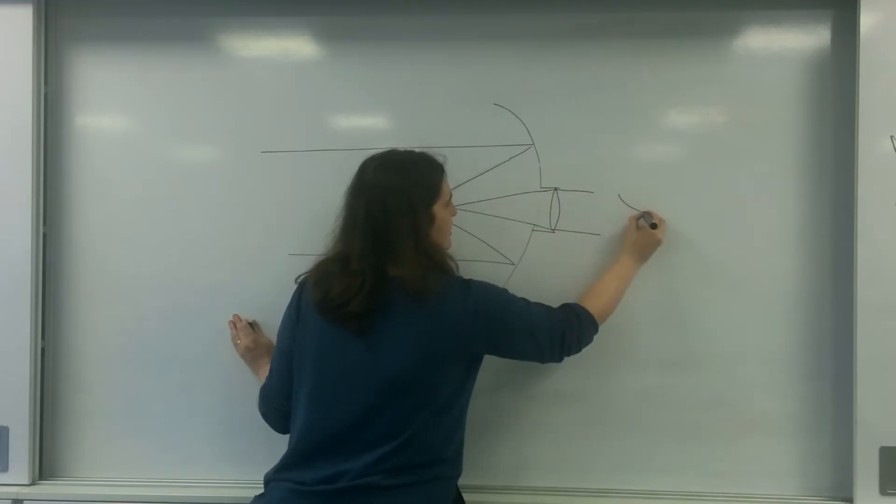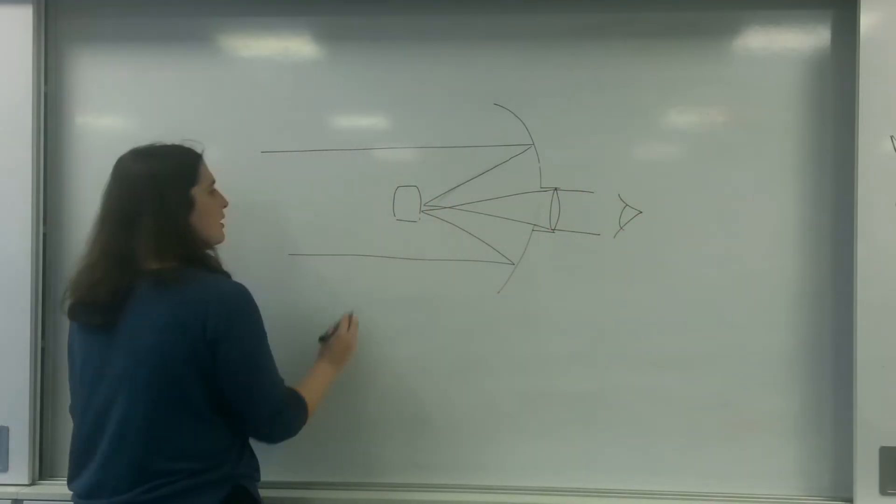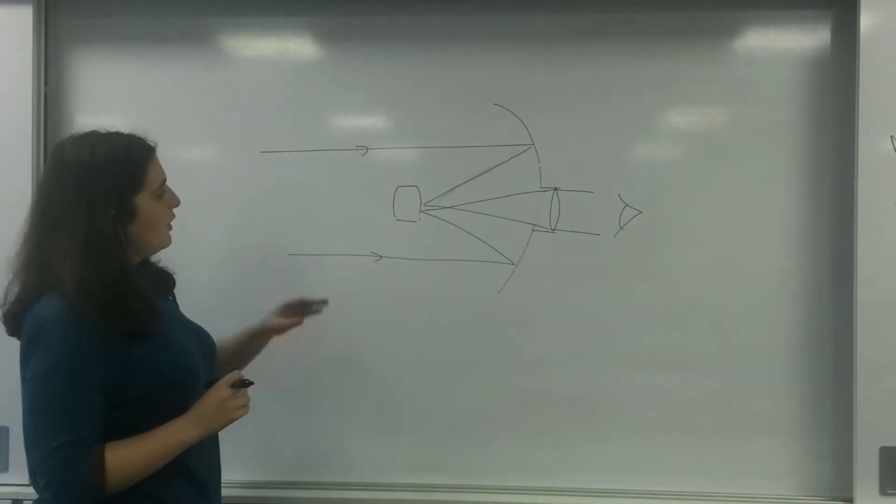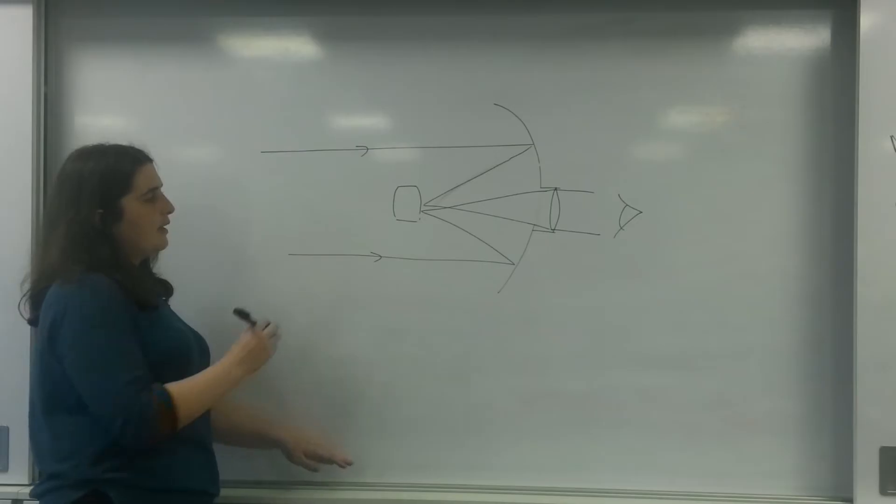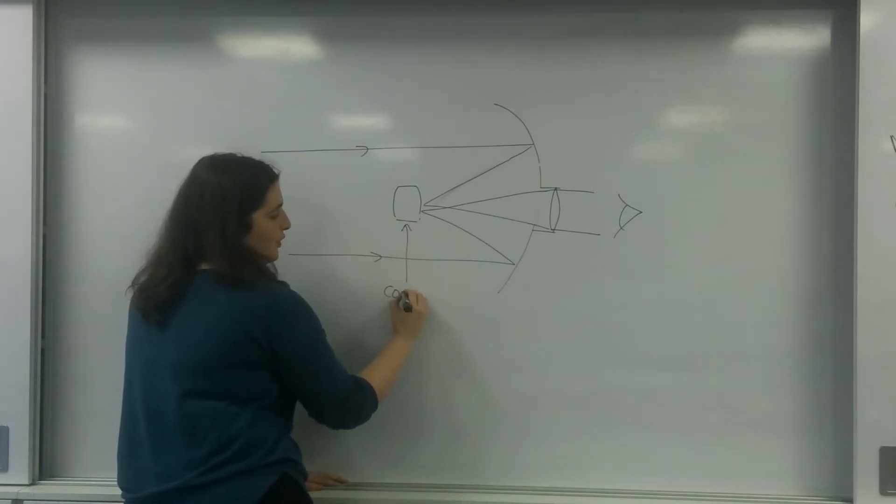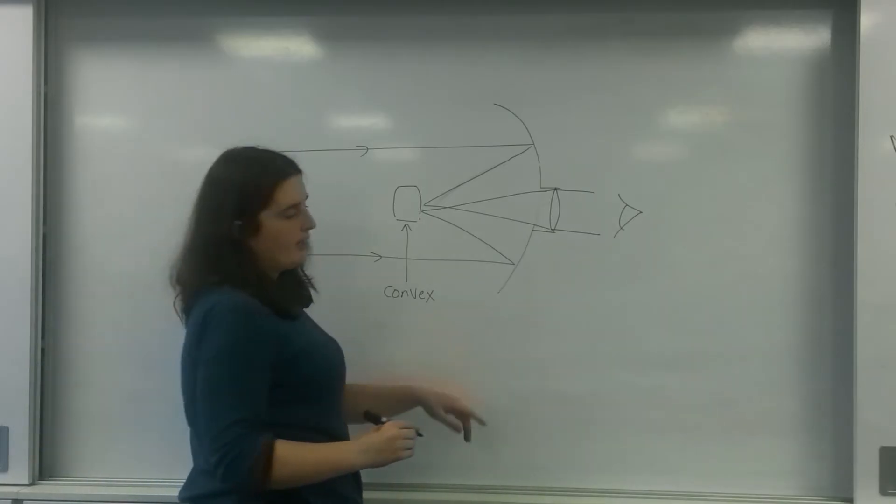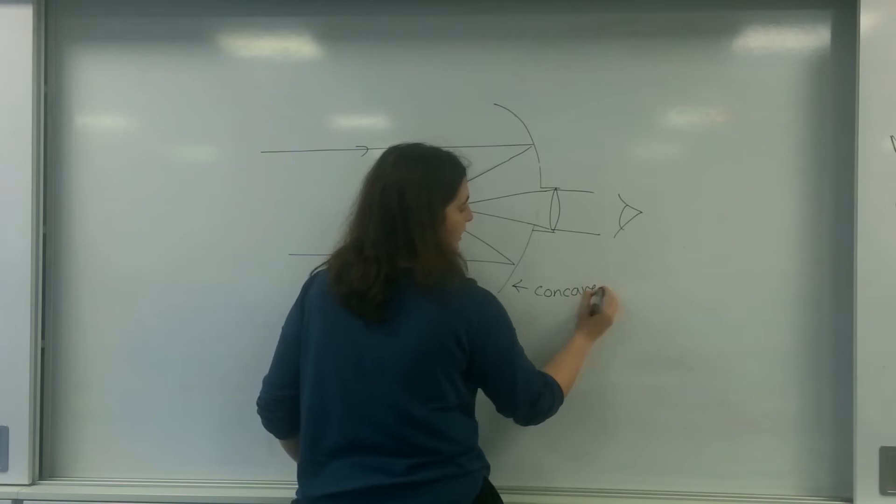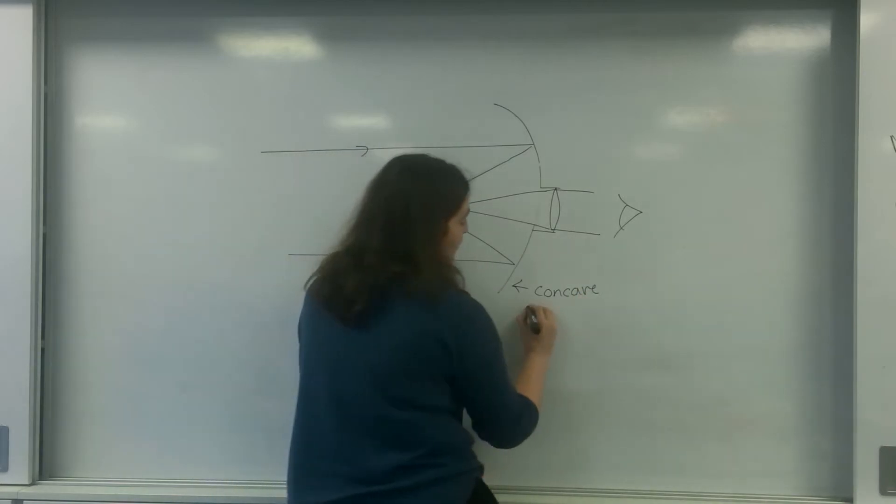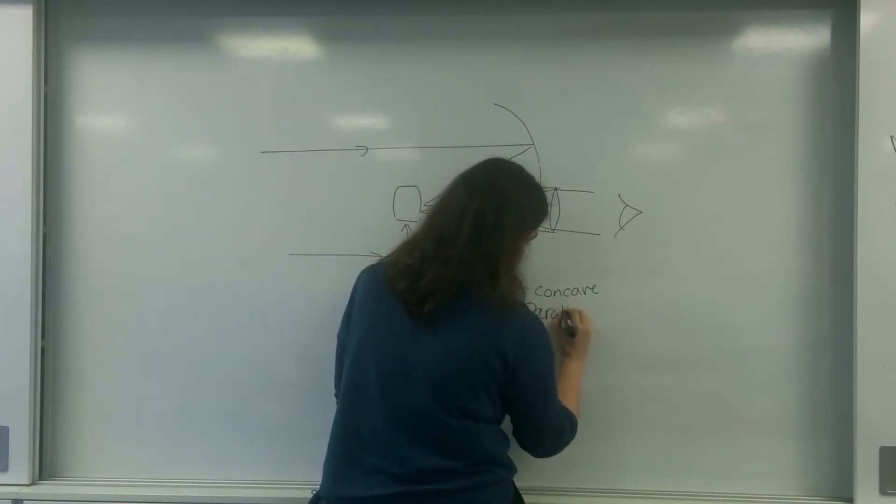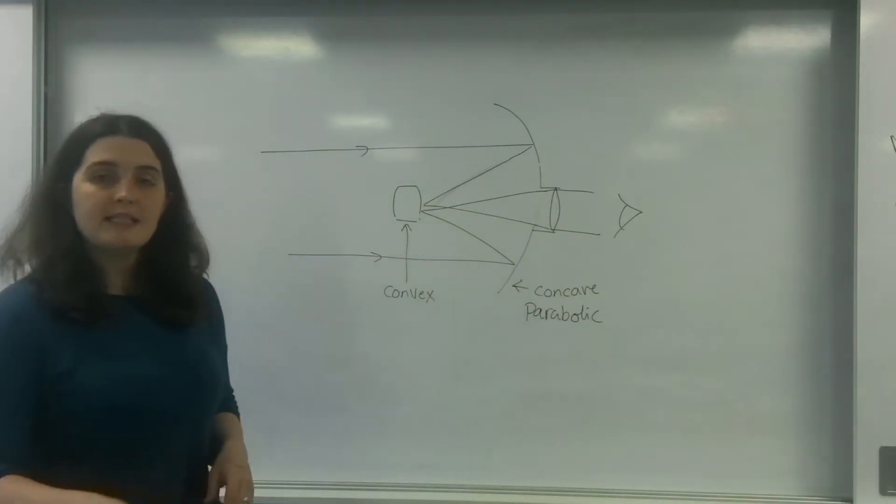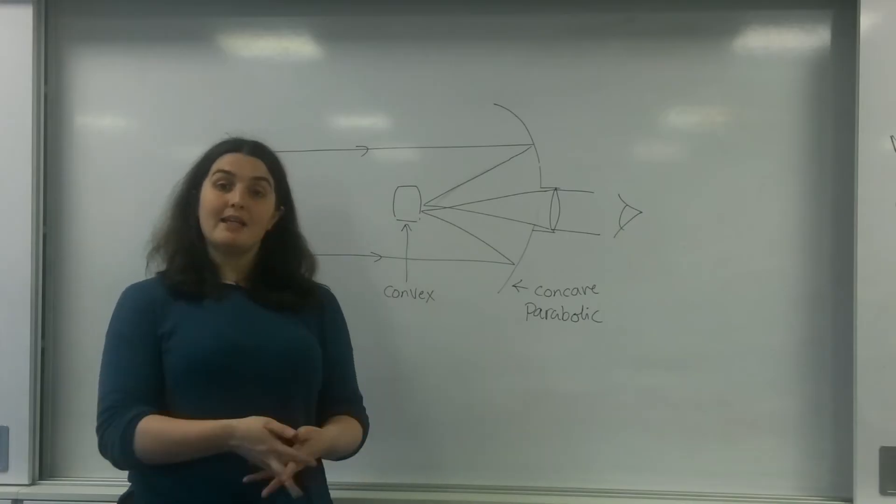The lens then takes the image and sends it to your eye. This mirror here is convex, and this mirror here is concave, and in particular it's parabolic. So this here is how a cassegrain system works.